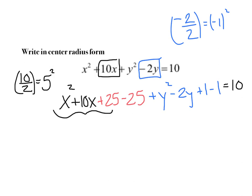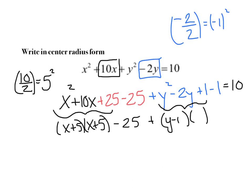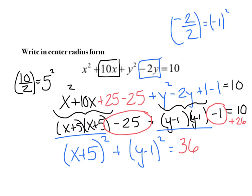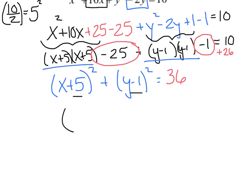The first three terms factor nicely on each group. So this becomes x plus 5 squared minus 25, plus y minus 1 squared minus 1, equals 10. Grouping the constants: negative 25 and negative 1 is negative 26, so adding 26 to both sides gives x plus 5 squared plus y minus 1 squared equals 36. Now in center-radius form: my center is negative 5, positive 1, and radius squared equals 36 so my radius equals 6.